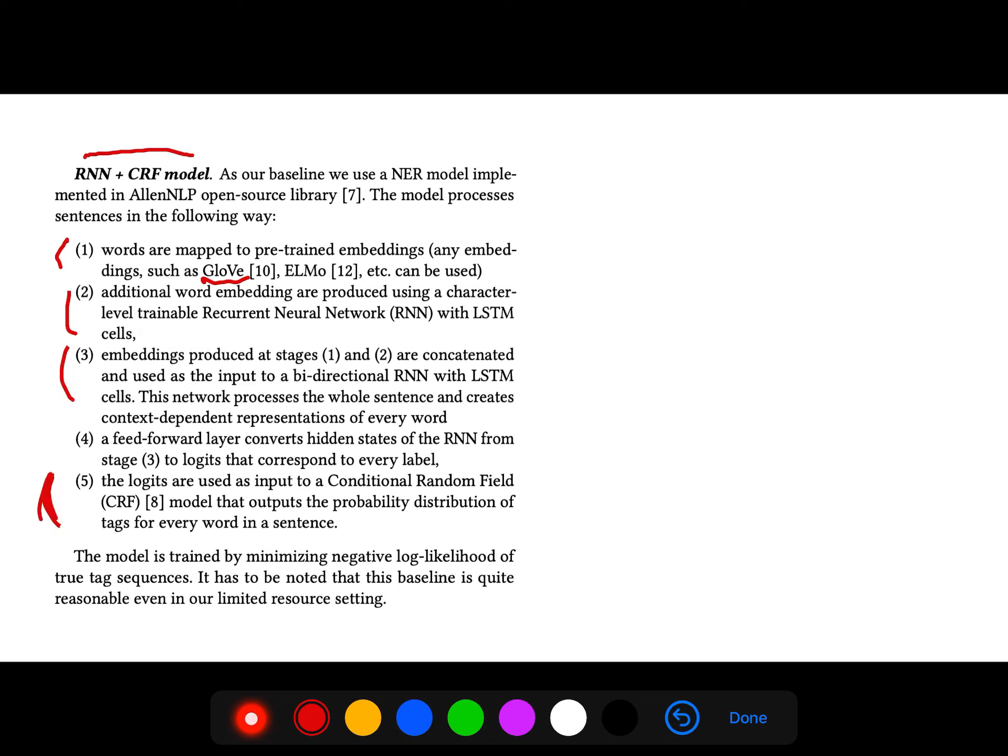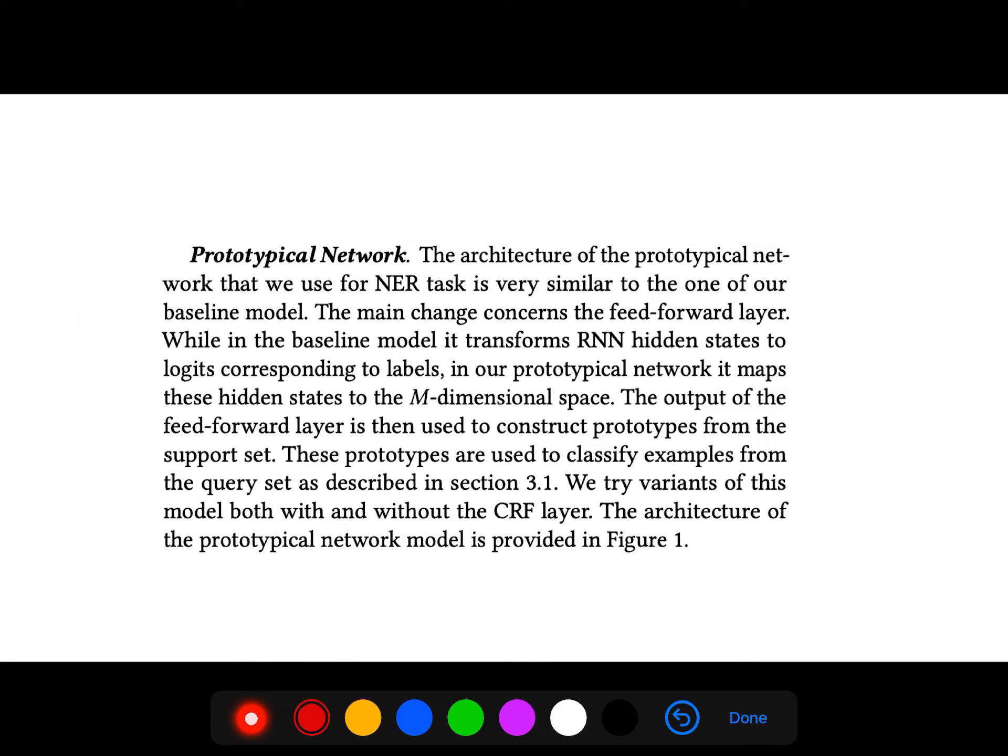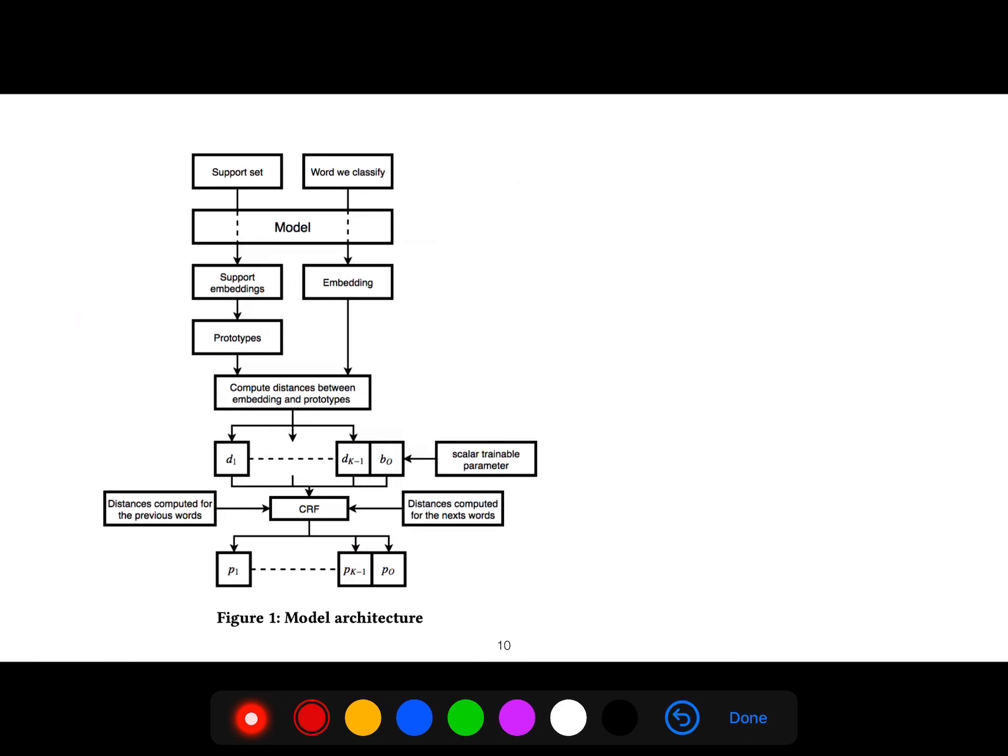Finally, the logits are used as input to a CRF which outputs the distribution of tags for every word. In prototypical networks, we have support sets and classify by creating prototypes through simple averaging. In contrast to other articles that use attention, they compute distances. The significance of this paper is that they use CRF—the distances computed for next words are sources of information for conditional random fields, along with distances computed from previous words, and finally they achieve these probabilities.